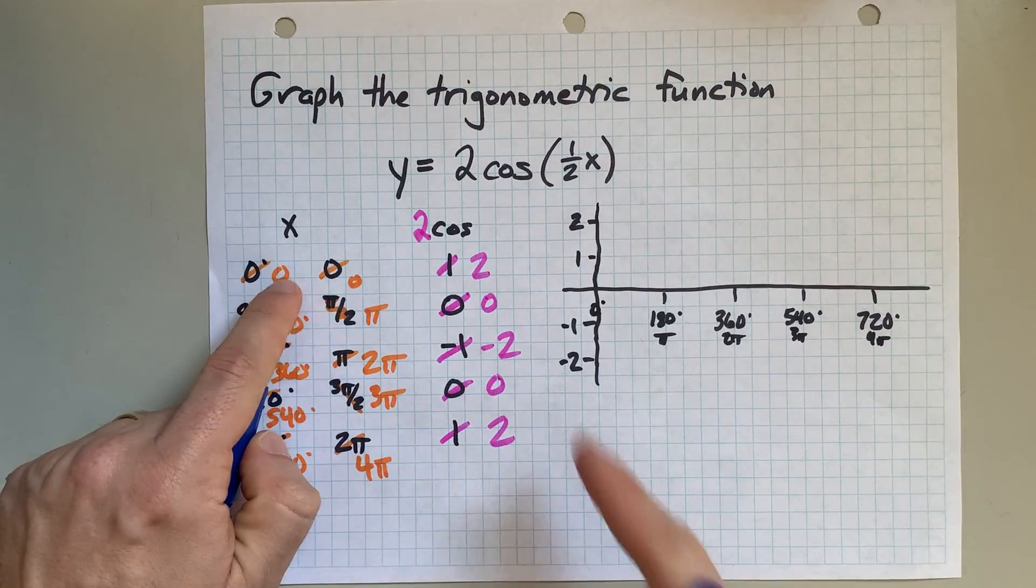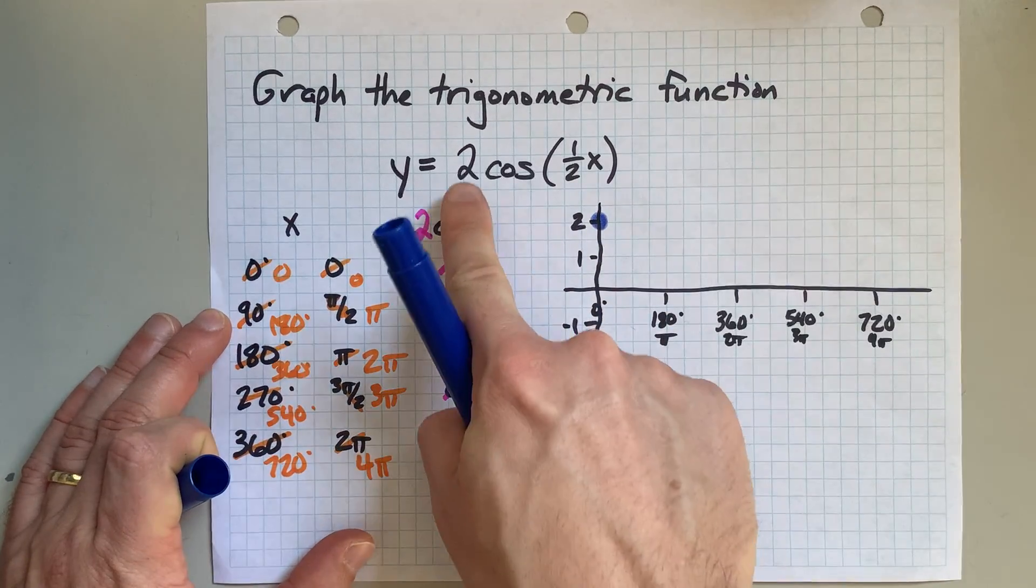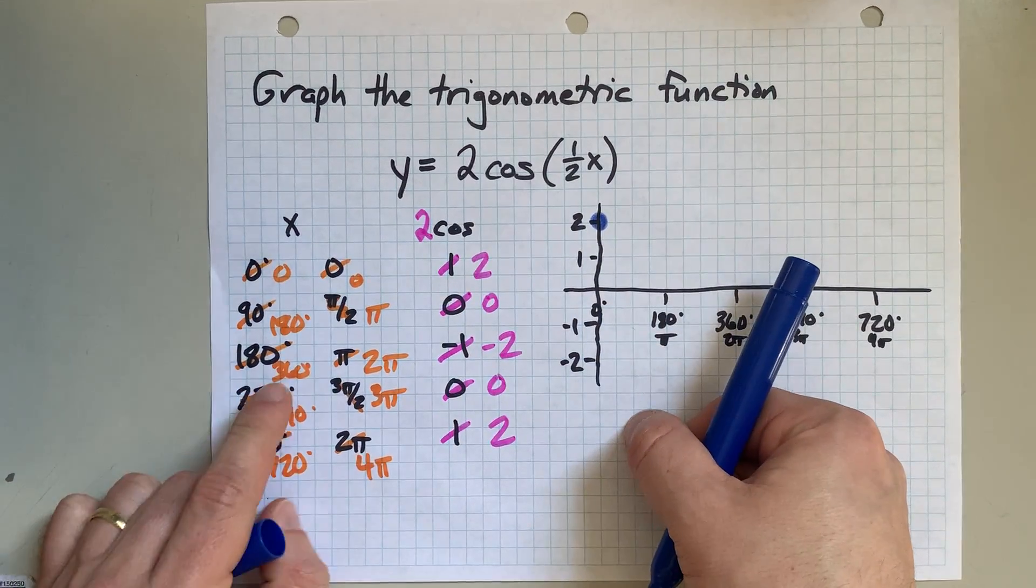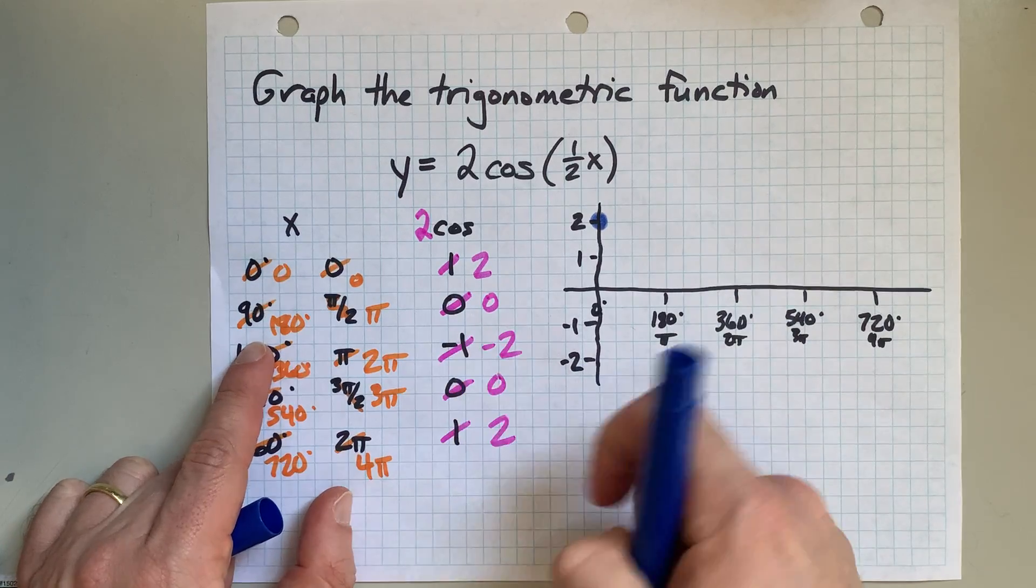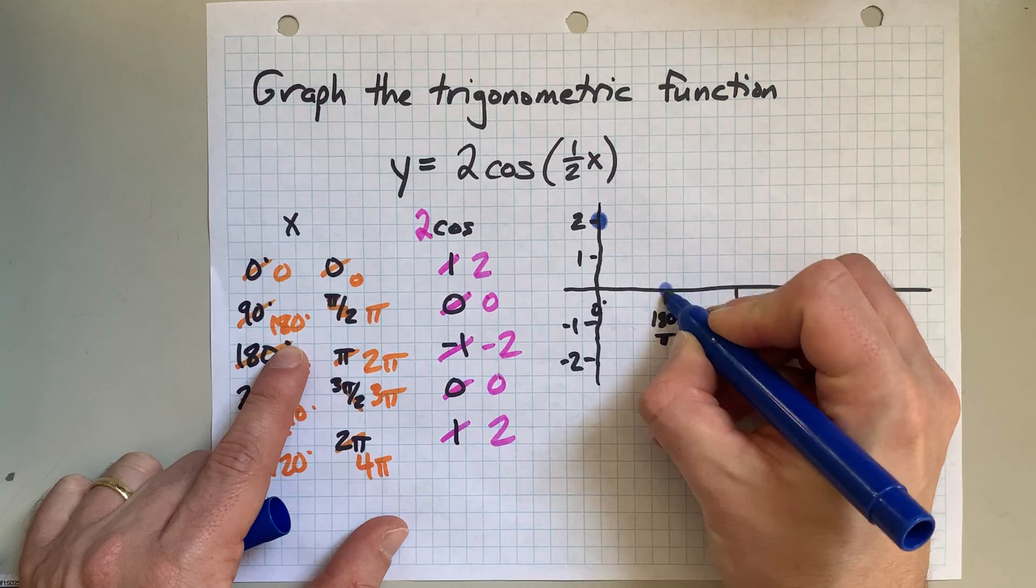We have a point at 0, 2. Which, the only real effect here is that it's been stretched vertically by 2. But then 90, 0 became 180, 0. So, it's been stretched horizontally.